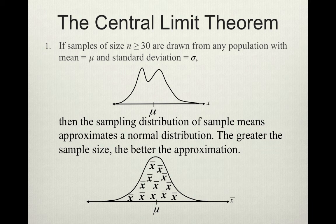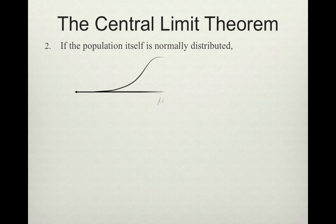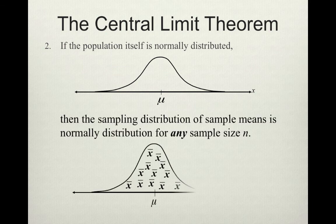We have one condition: we need sample sizes greater than or equal to 30. If we do that, then we can use the central limit theorem, which tells us that our sampling distribution of sample means is approximately normal. The other possibility says that if the population itself is normally distributed, then the sampling distribution of sample means is normally distributed for any sample size n. So we either have to have sample sizes larger than 30, or we need to have a population that is normally distributed.